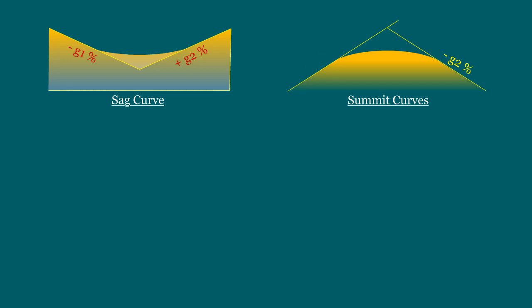The first is a positive grade G1 is followed by a negative grade G2. Second is a negative grade G1 is followed by a positive grade G2.